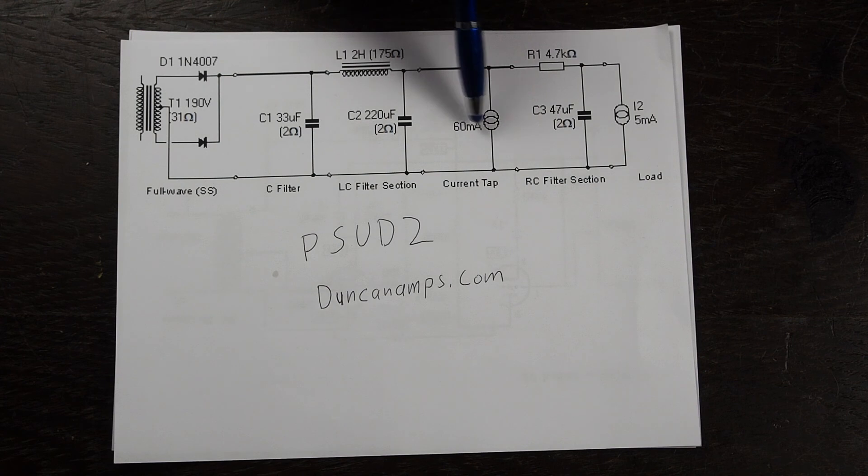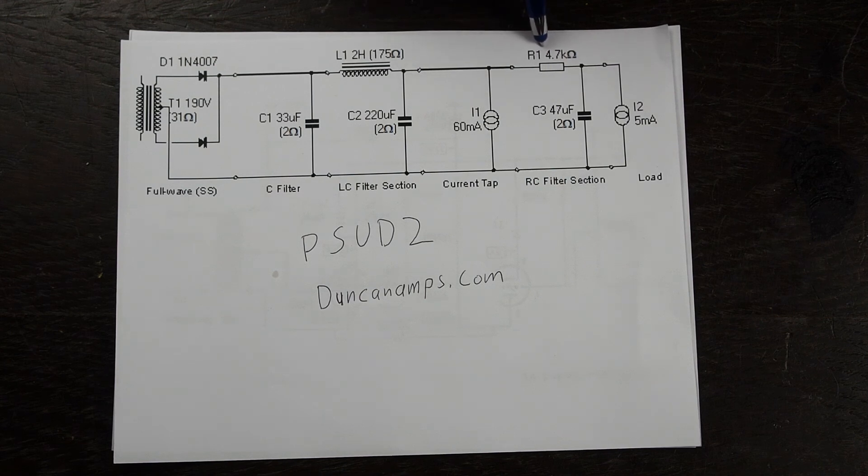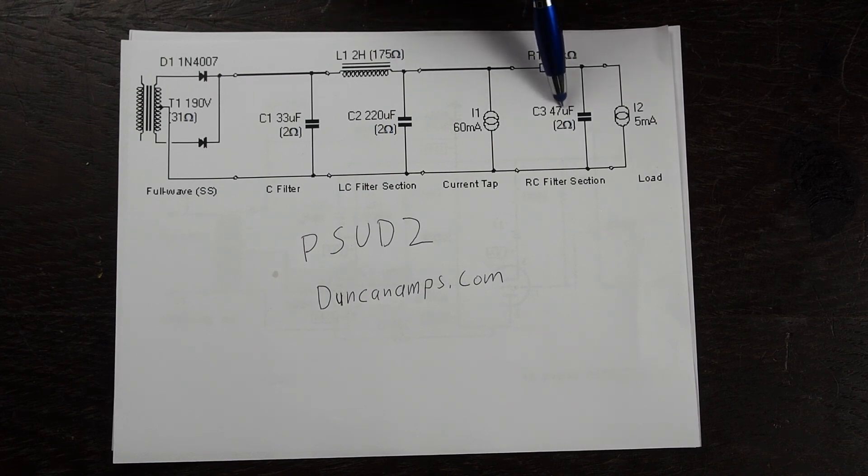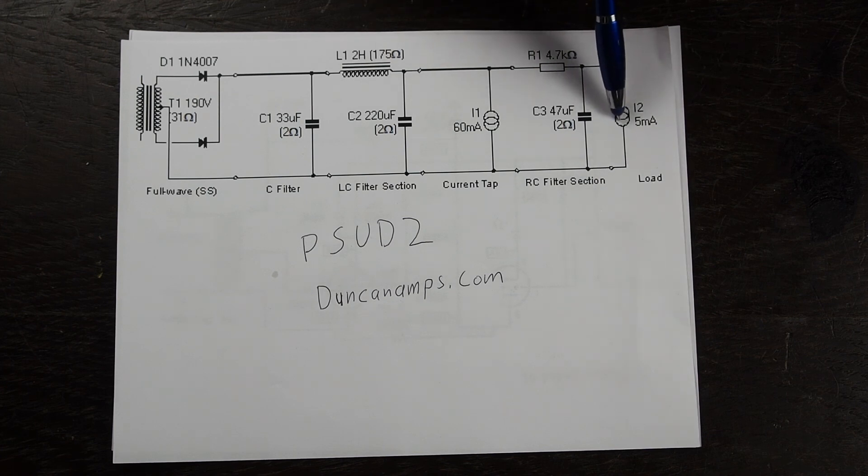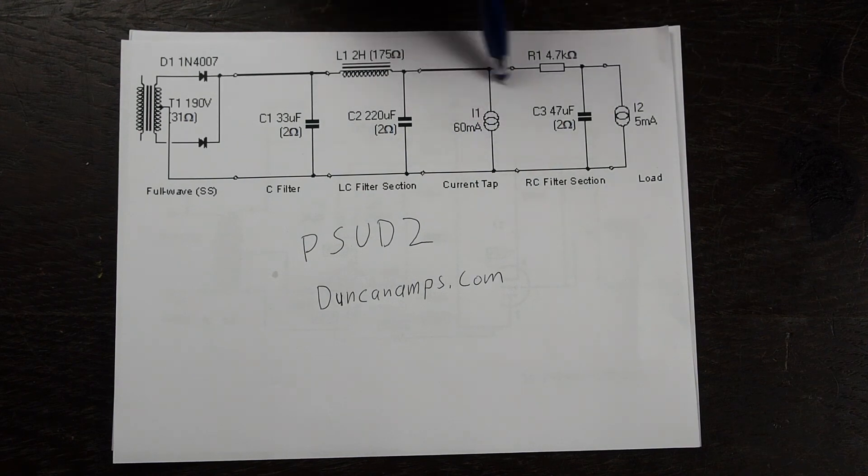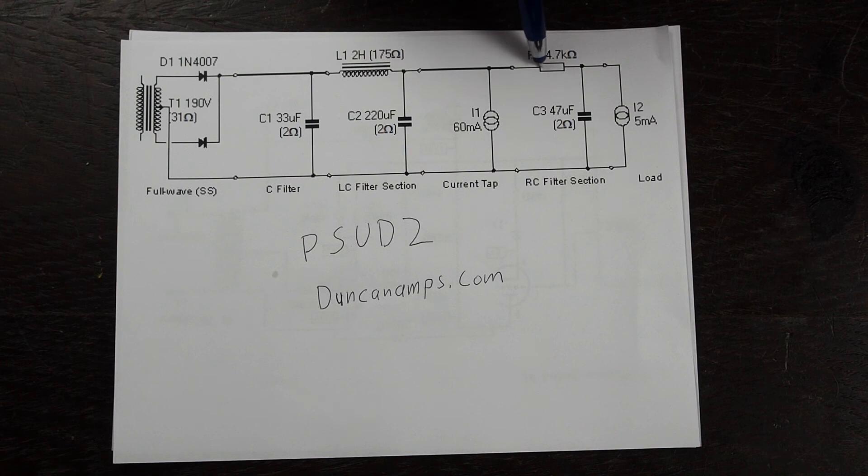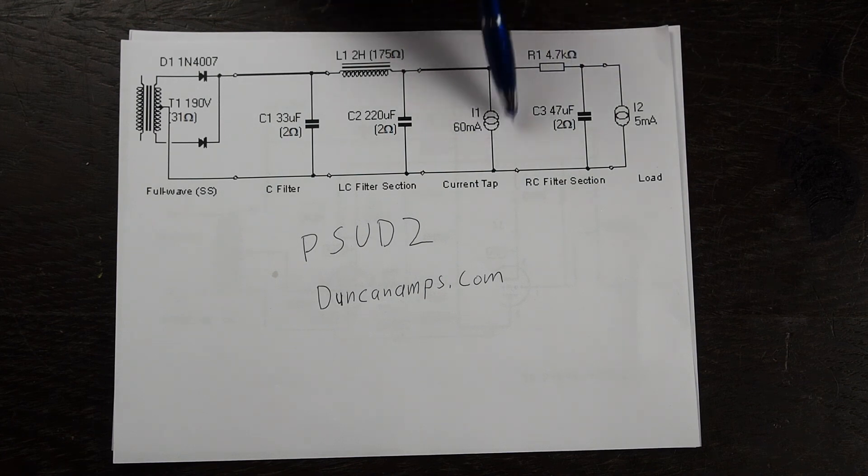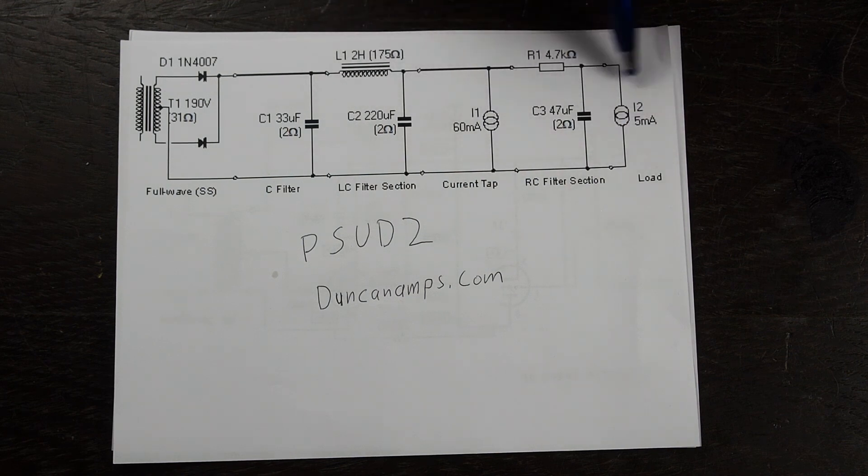This right here is the 60 milliamp approximate load of the main output tubes and then there will be a pair of these 4.7k resistors with a 47 microfarad capacitor that decouples the driver tube section from this part of the amplifier. It's important that this be here so that when the driver tube has a current draw it'll pull it from this capacitor and what's going on in this part of the amplifier doesn't affect this part over here.